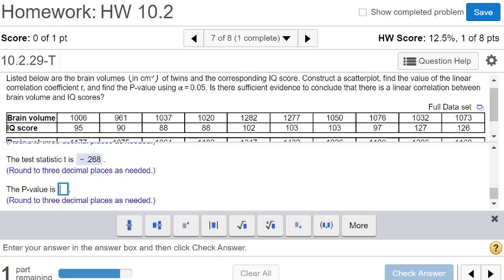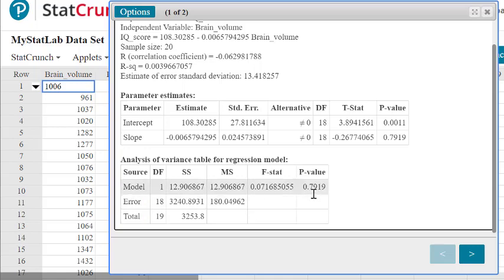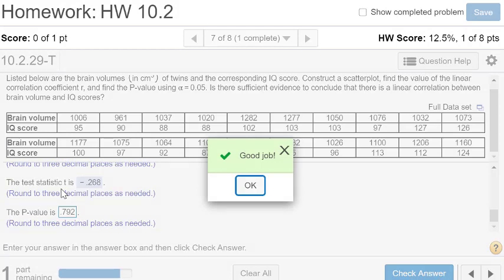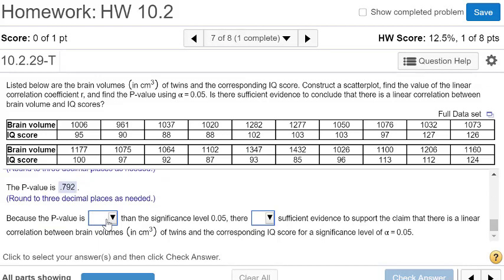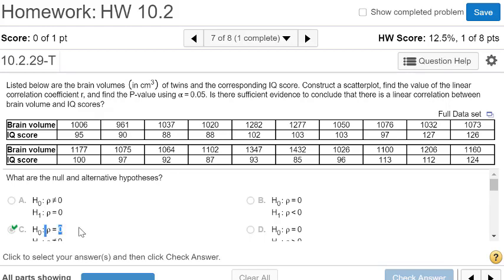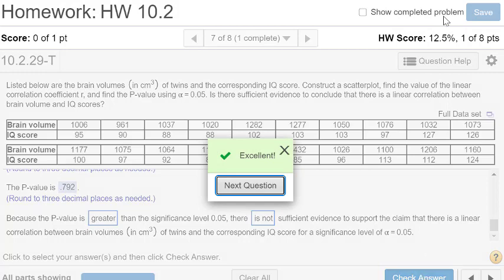They want us to find the p-value - 0.792. We got a p-value that's fairly large, which means we're not going to reject the null hypothesis. The null hypothesis says rho equals zero, meaning no correlation. Since the p-value is greater than the significance level, we cannot support the claim that there is linear correlation. There's not sufficient evidence to support the claim of linear correlation. I hope that helps.